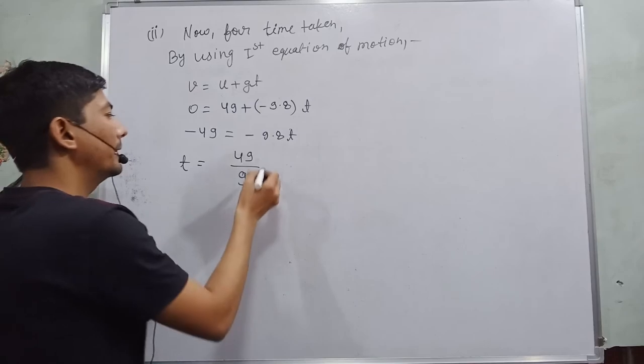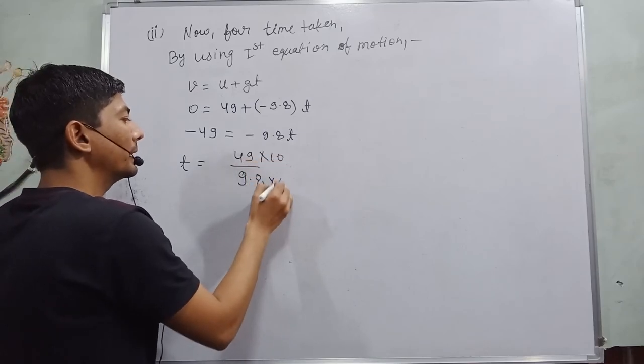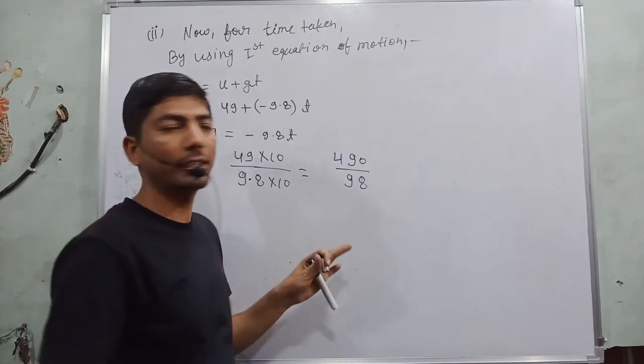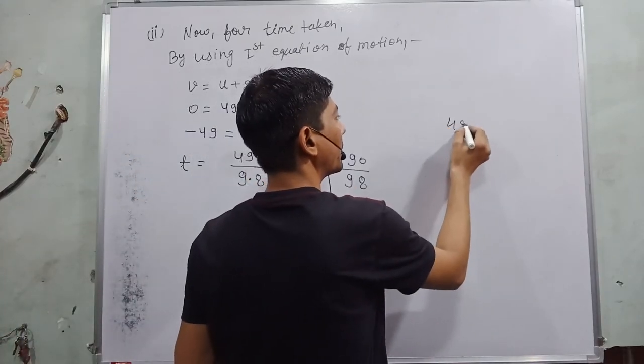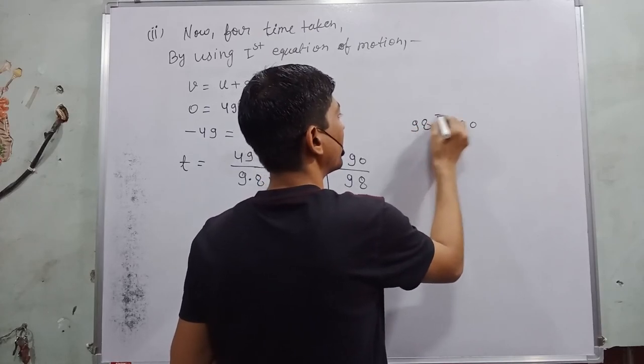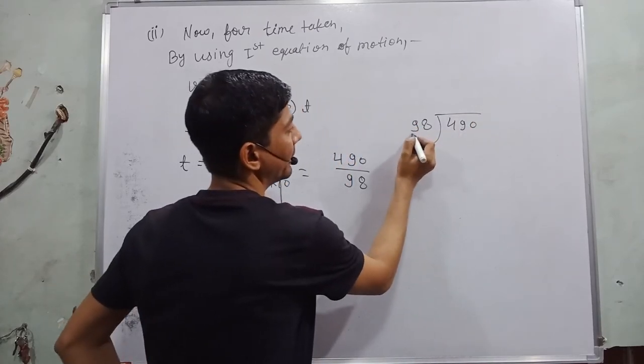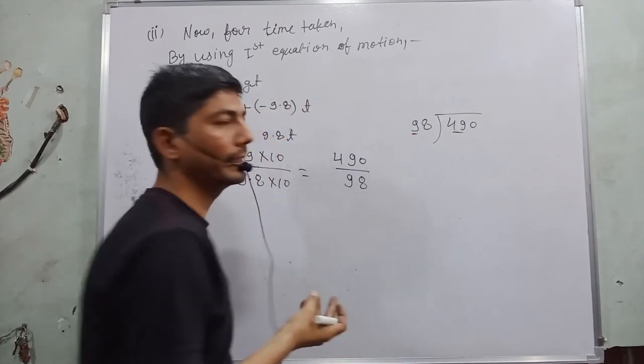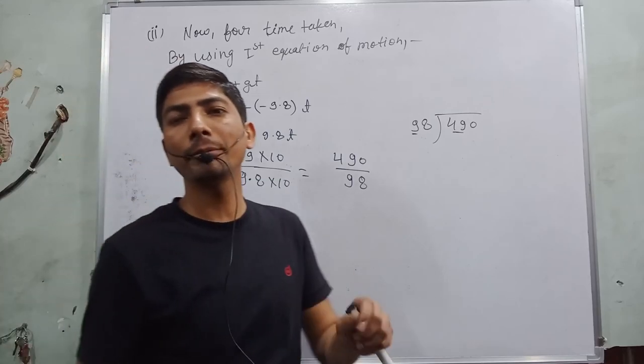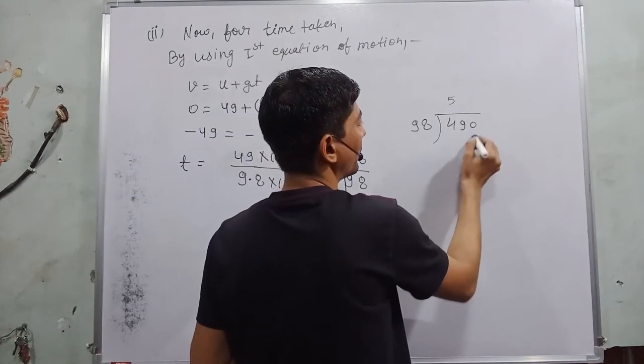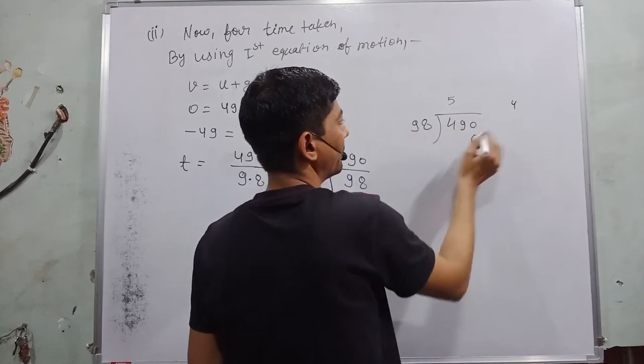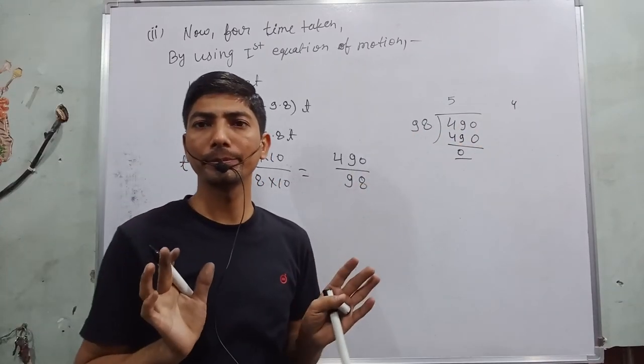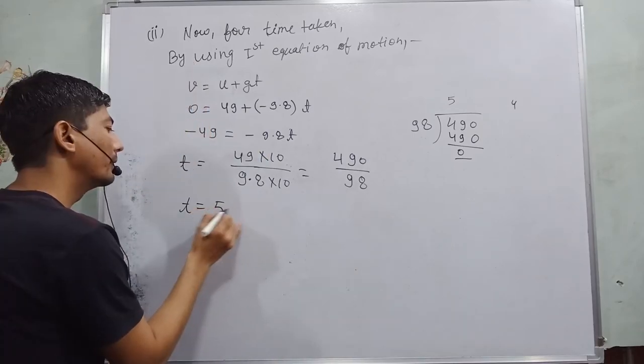In order to solve this, we multiply by 10 for removing decimal. So here it become 490 by 98. I solve it by common division method. So I write here 490 divide by 98. So first I read these two digits. 9, 9, 1, 0, 9, 9, 2, 0, 18, 9, 3, 0, 27, 9, 4, 0, 36, 9, 5, 0, 45, 5, 8, 0, 40, 4 carry 5, 9, 0, 45, 4, 49, it almost goes 5 times. So I write here t is equal to 5 seconds.